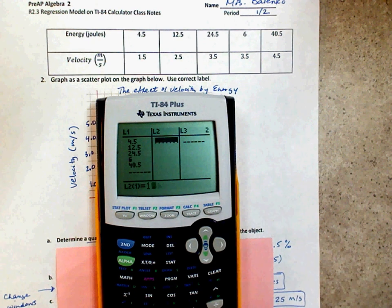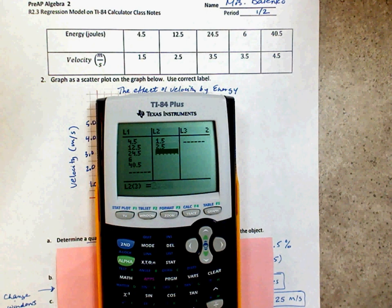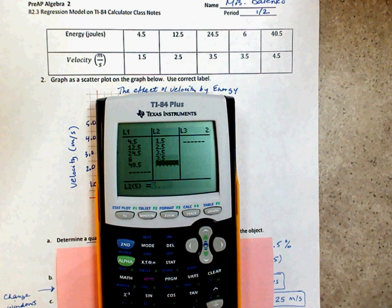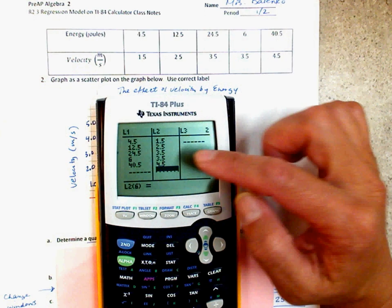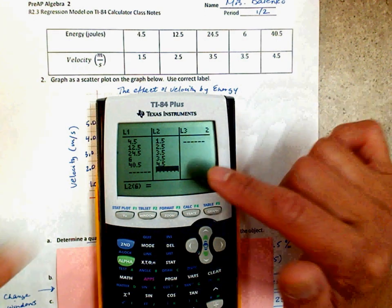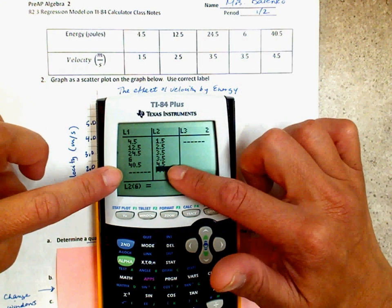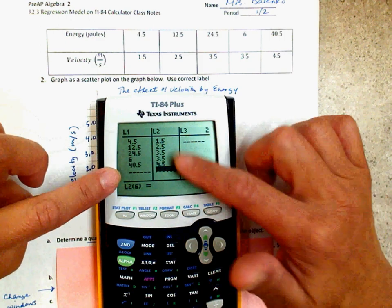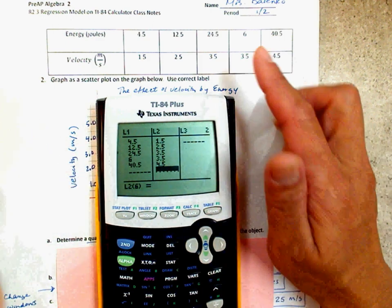Your y value, 1.5, 2.5, 3.5, 3.5, 4.5. If one number is wrong, it'll give you a different calculation. So, make sure you check. For every L1, you have an L2. For every x value, you have a y value.